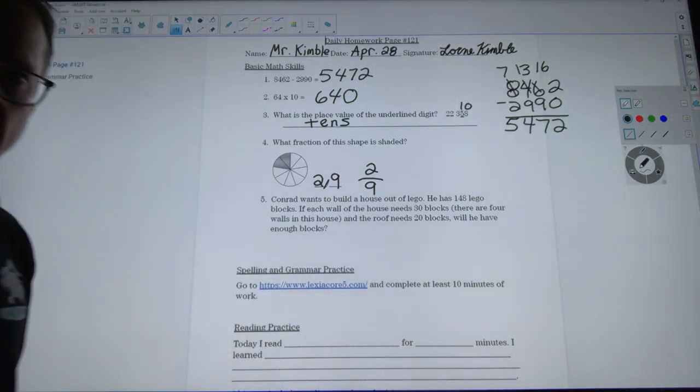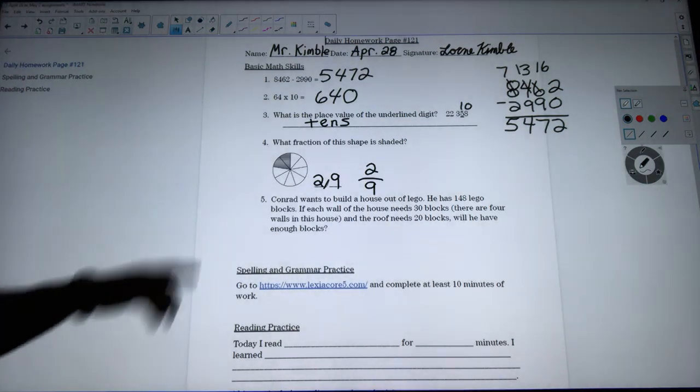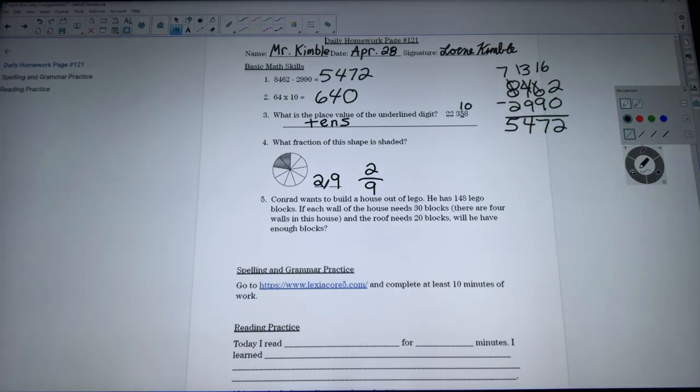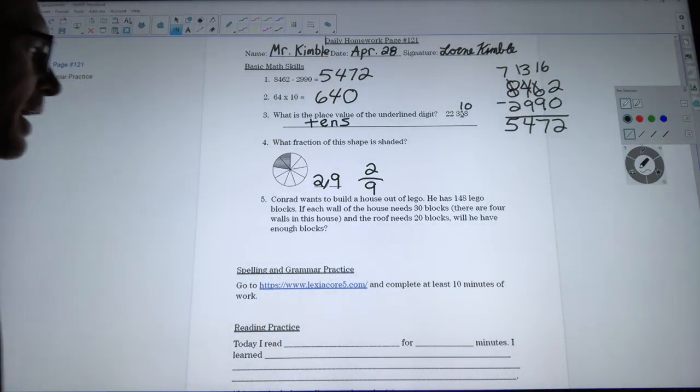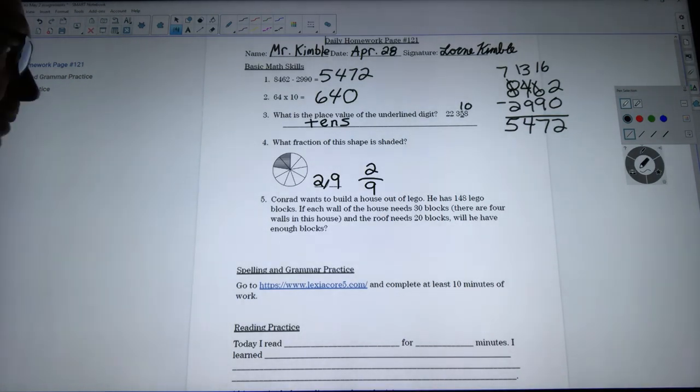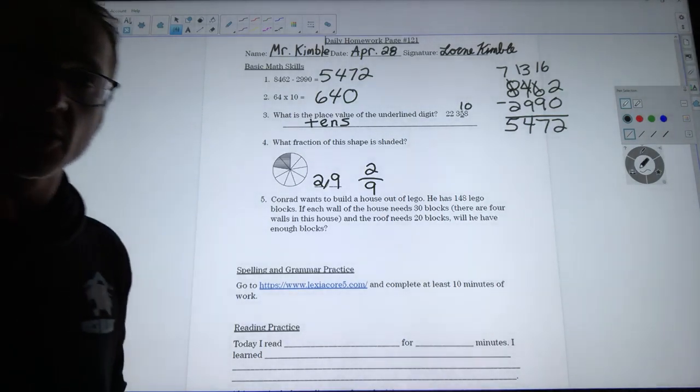If I wanted to show that with the horizontal fraction line it would look like that. Last one is a word problem. It says Conrad wants to build a house out of lego. He has 148 lego blocks. If each wall of the house needs 30 blocks, there are four walls in this house and the roof needs 20 blocks, will he have enough blocks?